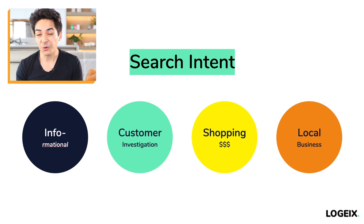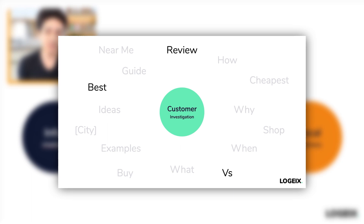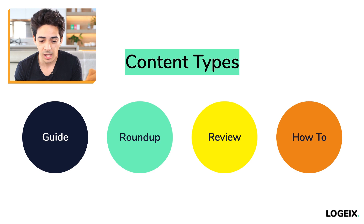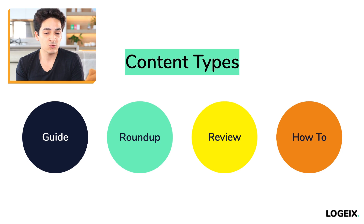Beyond intent, there's also the type of content — and there are really four main types. There are guides, as in a full guide on how to do rank and rent. There's a roundup — a list of 15 different haircut styles for Pomeranians. There are reviews, like reviewing the best smart luggage. And there's 'how-to,' which can be similar to a guide but smaller, like how to groom your Pomeranian. Make sure you check not only the intent but also the right type of content for that intent.